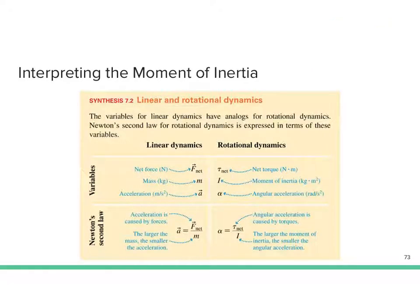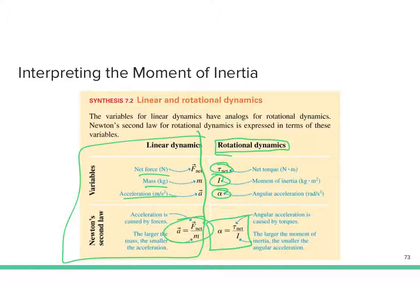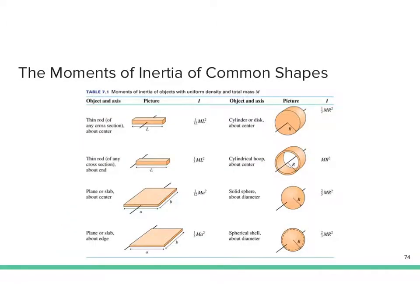To pair this up: in linear dynamics we have net force, mass, and acceleration with Newton's second law. In rotational dynamics, instead of force we have torque, instead of mass we have moment of inertia — how your mass is distributed — and instead of acceleration we have angular acceleration. Everything we did earlier with forces we can now do for rotation. Since this is algebra-based physics, you will never have to solve for the moment of inertia yourself.